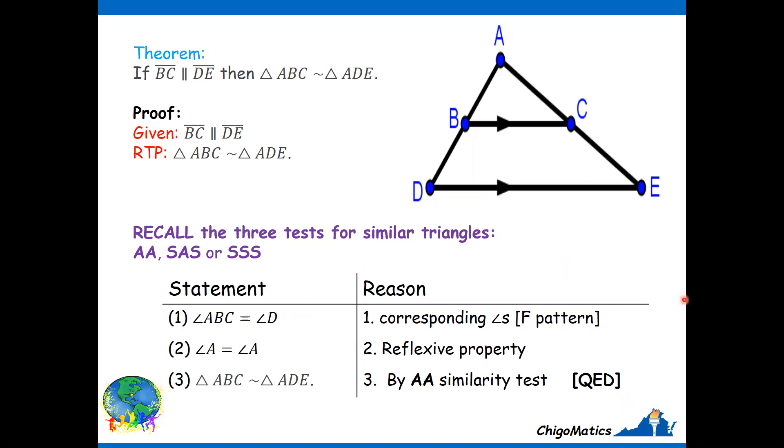It is very easy to identify the angle—angle ABC is equal to angle D. Why? Those are the corresponding angles, the F pattern on the parallel lines and the transversal line AD.